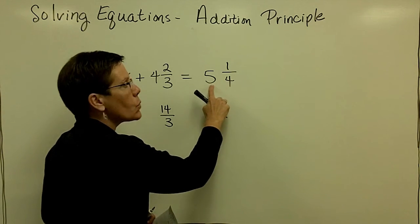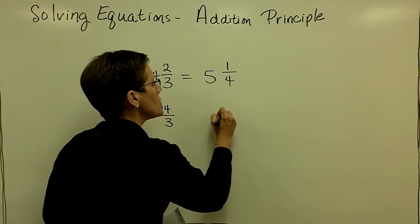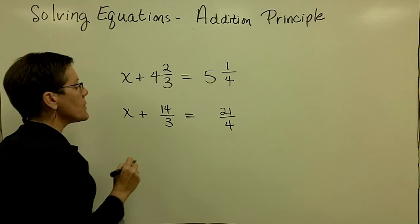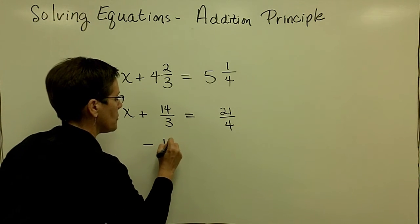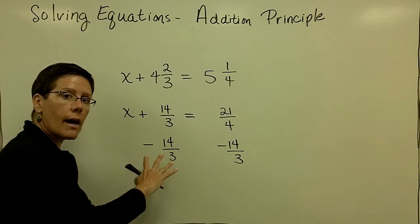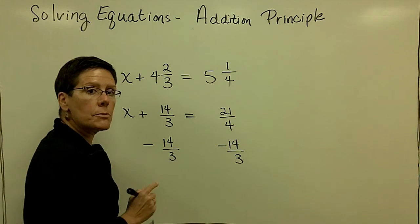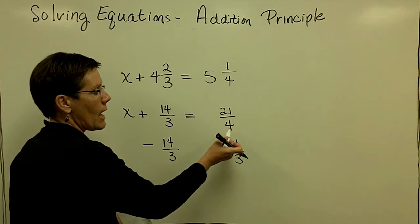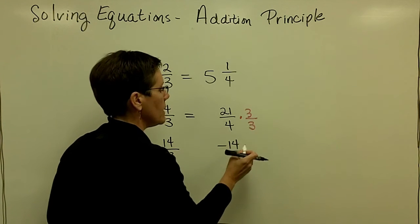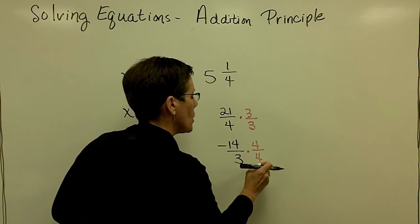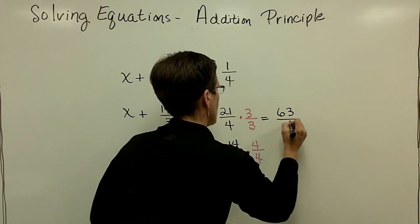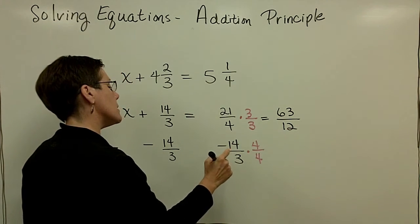And now what I'm going to do is I'm going to subtract 14 thirds from both sides of this equation, because I want to isolate x and get x alone. These cannot be subtracted because they do not have a common denominator. The common denominator is a 12, so I'm going to multiply this fraction by 3 over 3, and I'm going to multiply this fraction by 4 over 4, so they both have a denominator of 12. Upstairs here, I'll have 63 twelfths.